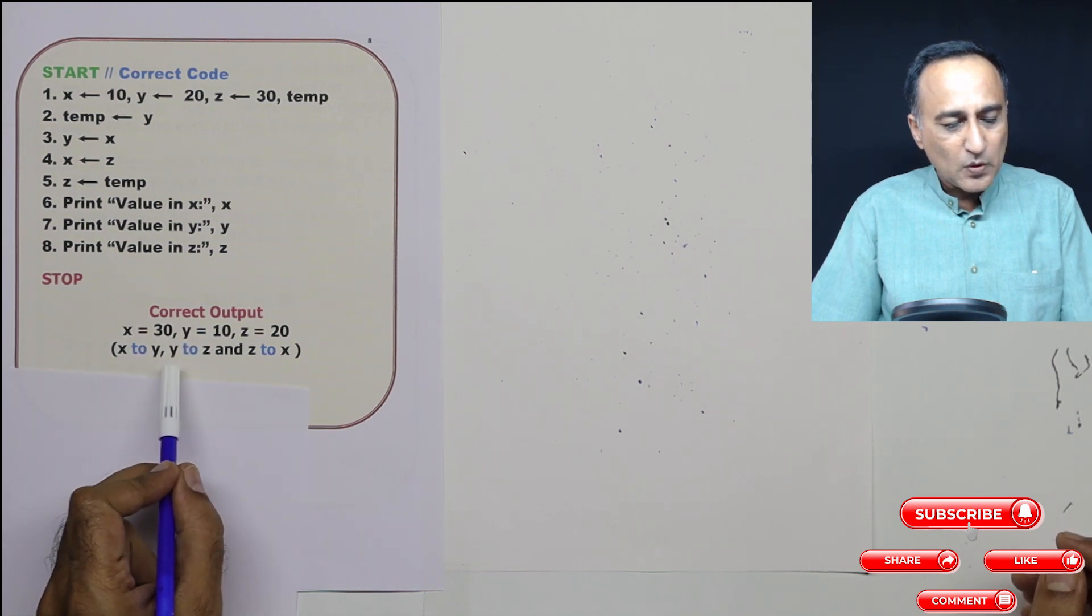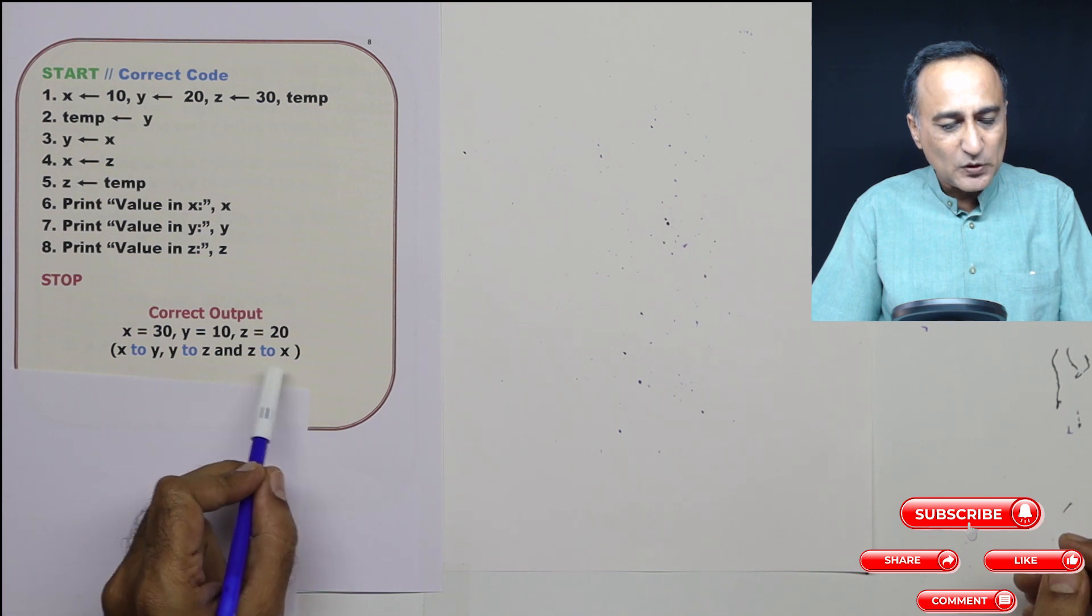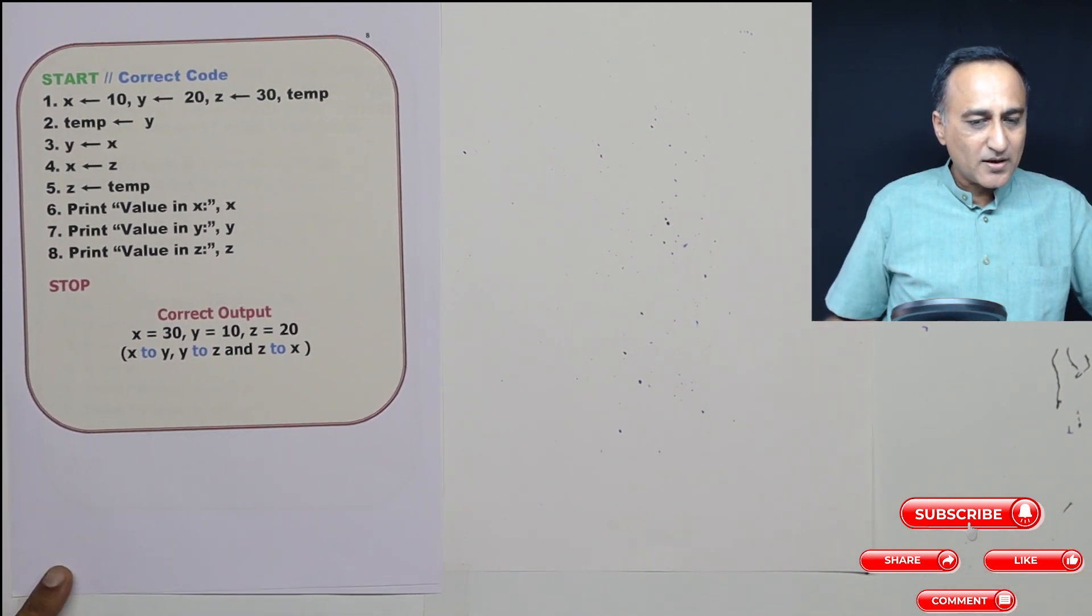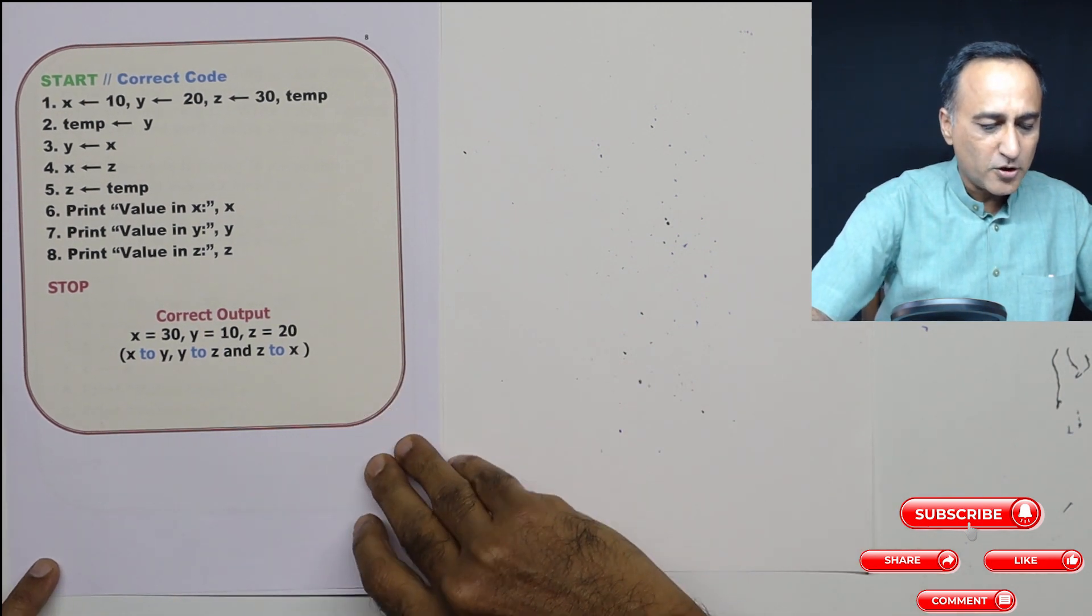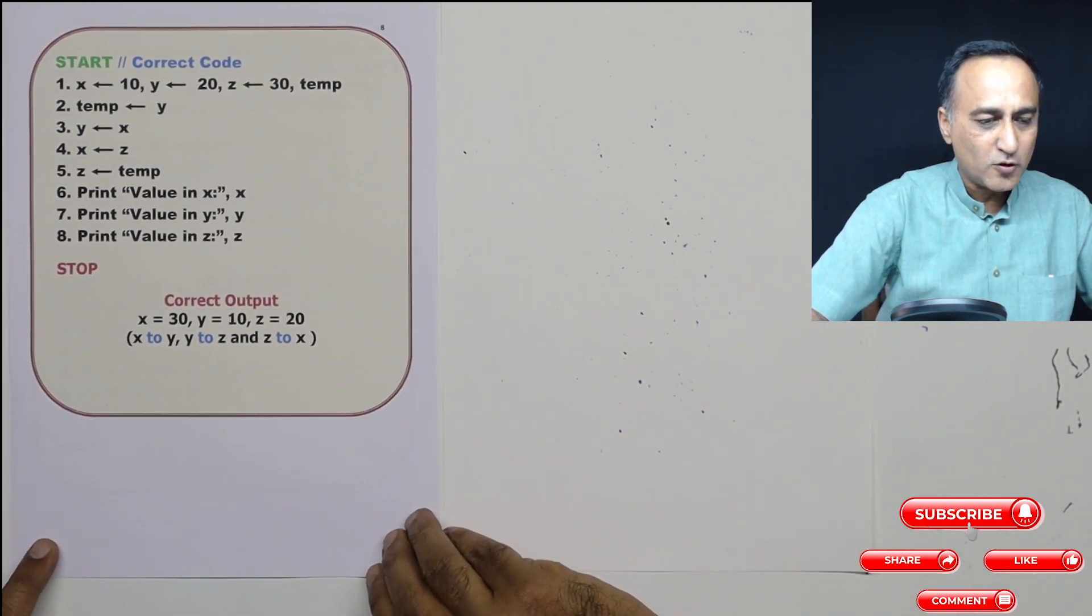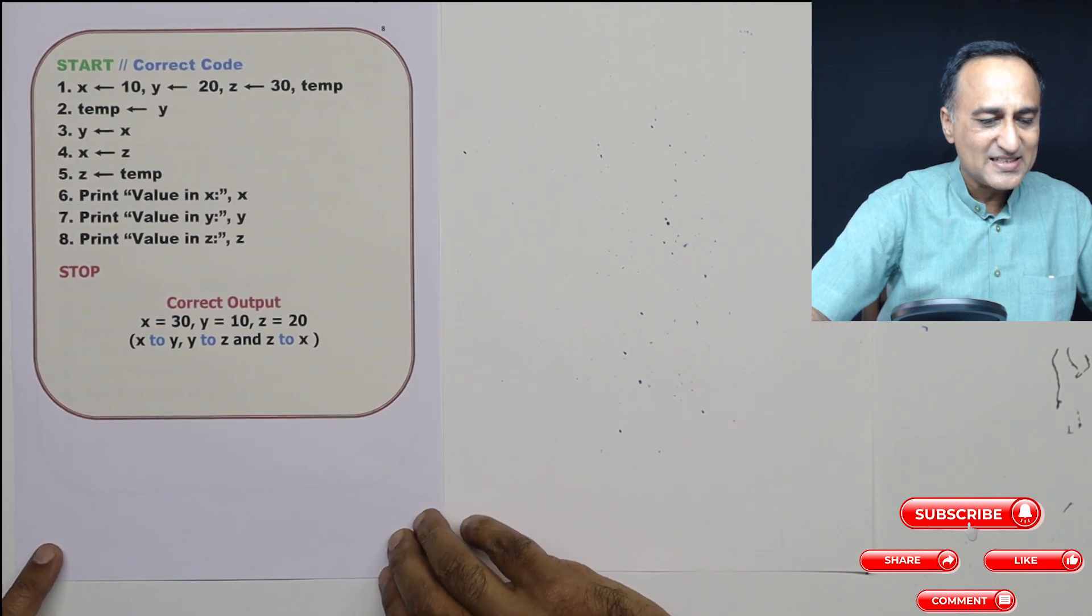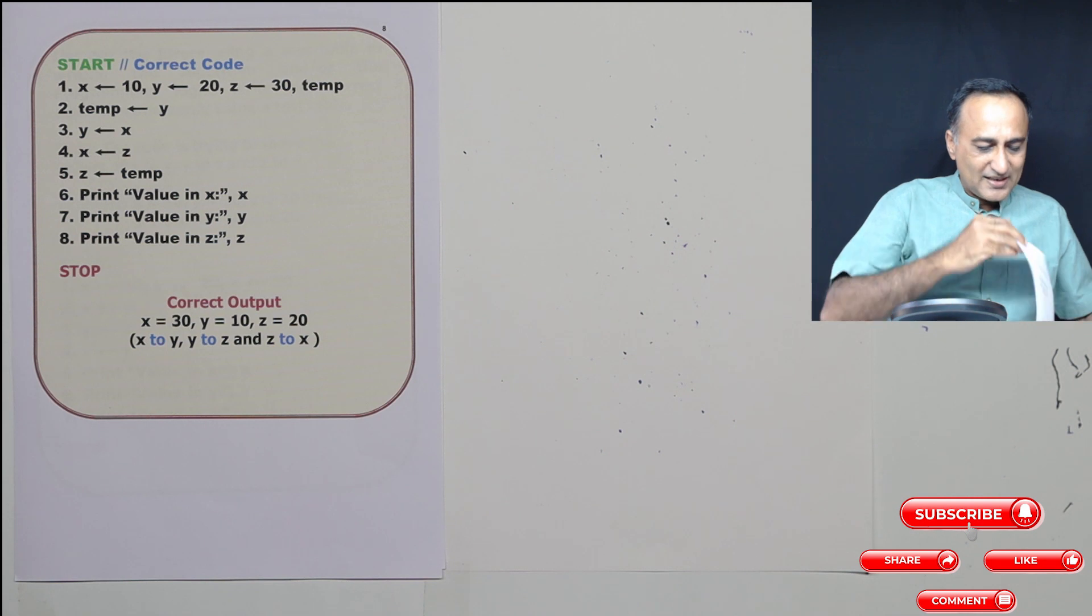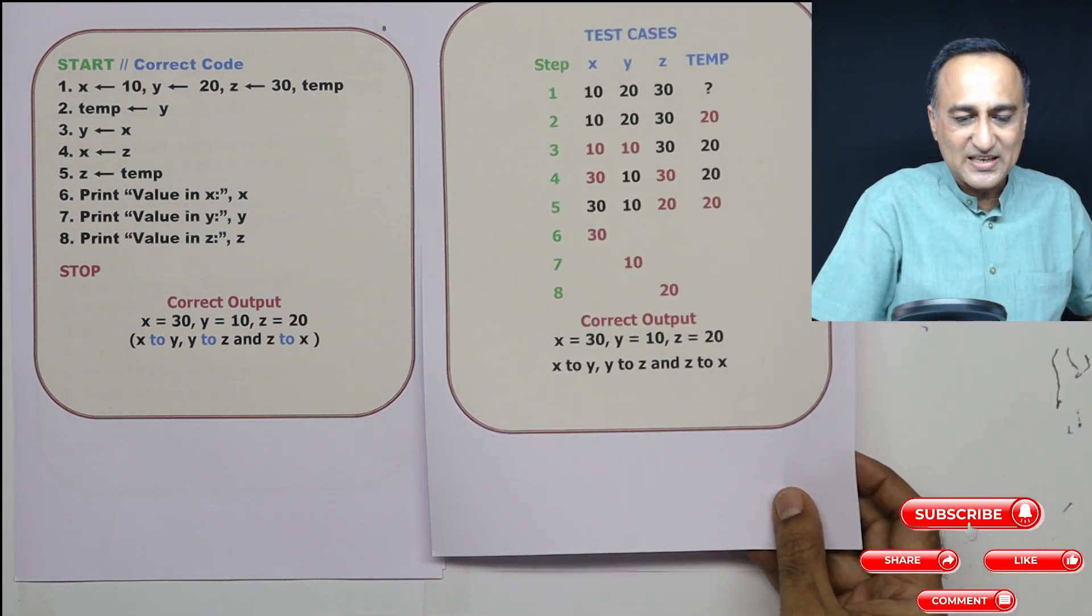So we should move x to y, y to z and z to x. So as usual, without trusting our logic too much, we are going to use the test table to find out whether what we have tried or attempted makes sense and is correct. So what I'm going to do here is I'm going to use the test table test case.